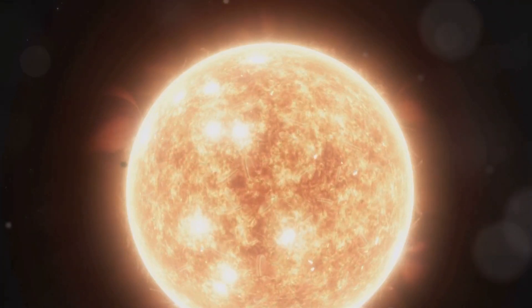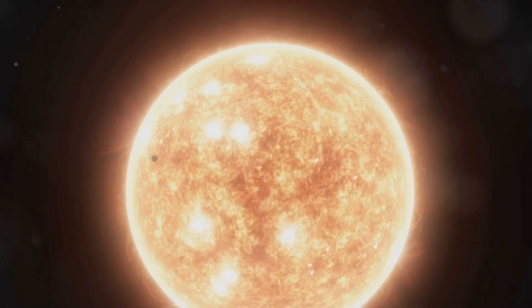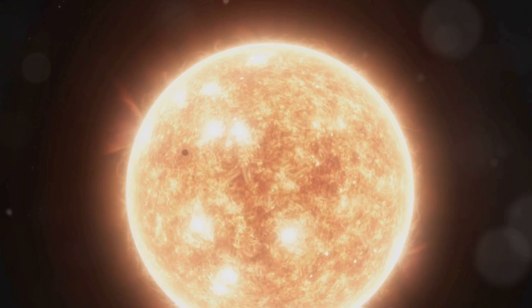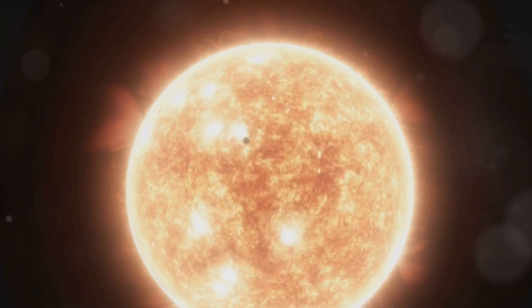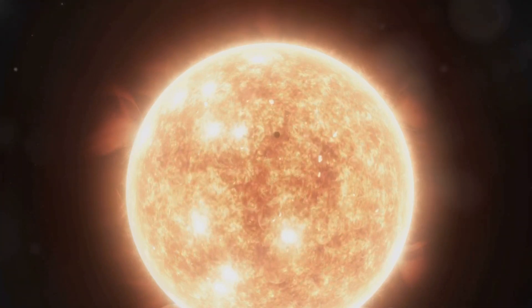Venus too lacks moons, eliminating the possibility of a traditional solar eclipse. However, Venus witnesses a phenomenon called a transit, where from its surface we can see Earth or Mercury passing directly in front of the sun.